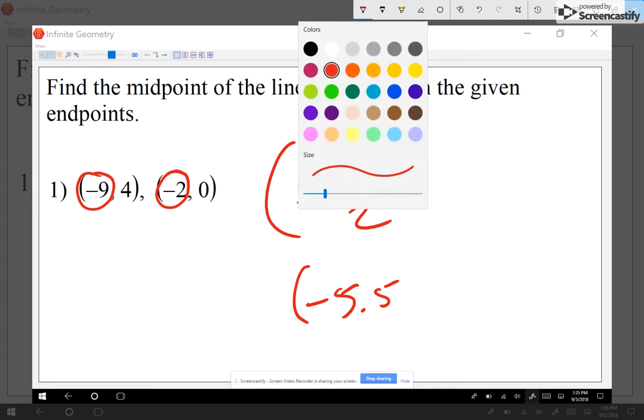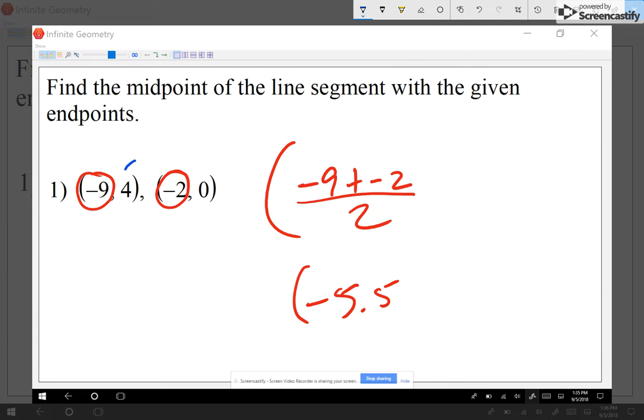Now for the y value, I'm gonna look at the y values that I'm given, and the same thing: I'm gonna add them, whatever I get I'll divide it by 2. Four plus 0 is 4, and 4 divided by 2 is 2.